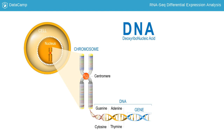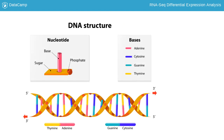The building blocks of our DNA are called nucleotides, and there are four different nucleotide bases in DNA: guanine, adenine, cytosine, and thymine. We'll refer to these nucleotides as G, A, C, and T. The double-stranded DNA forms a helix with a sugar phosphate backbone, and within this helix, A nucleotides pair with T and G nucleotides pair with C. The order of these nucleotides is called the DNA sequence.